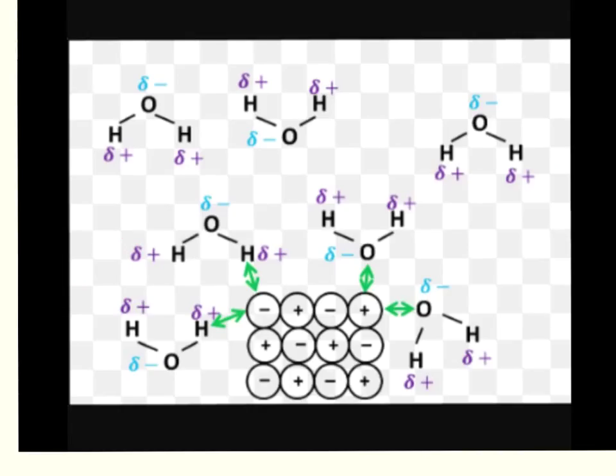You can see in this diagram we've got our giant ionic lattice surrounded by water. The slightly negative part of the water molecule—the oxygen—will be attracted to this positively charged ion. And then the negative ion will be attracted to the hydrogen of the water molecule, which is slightly positive.